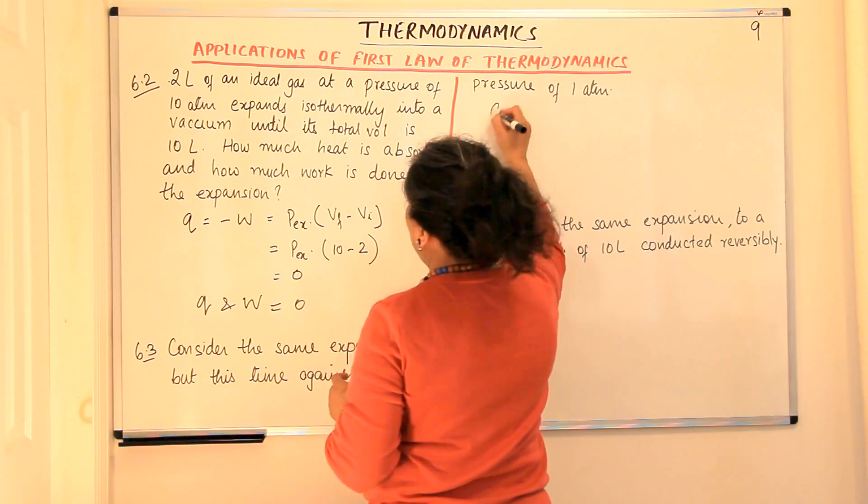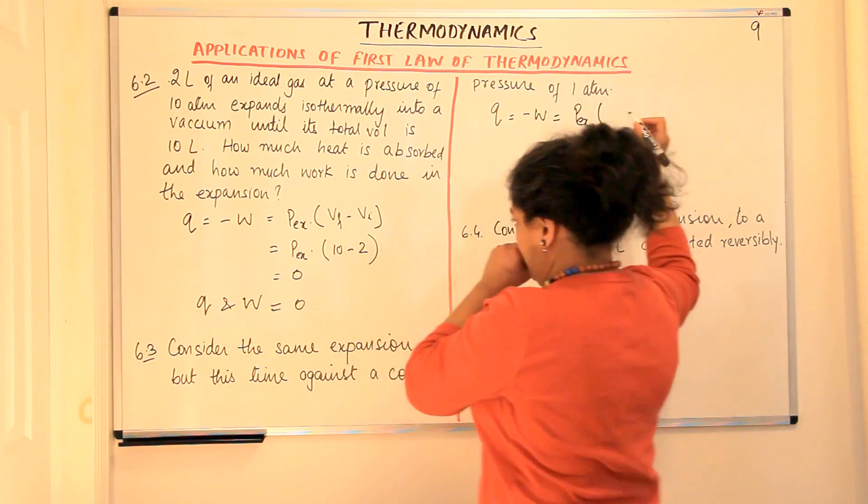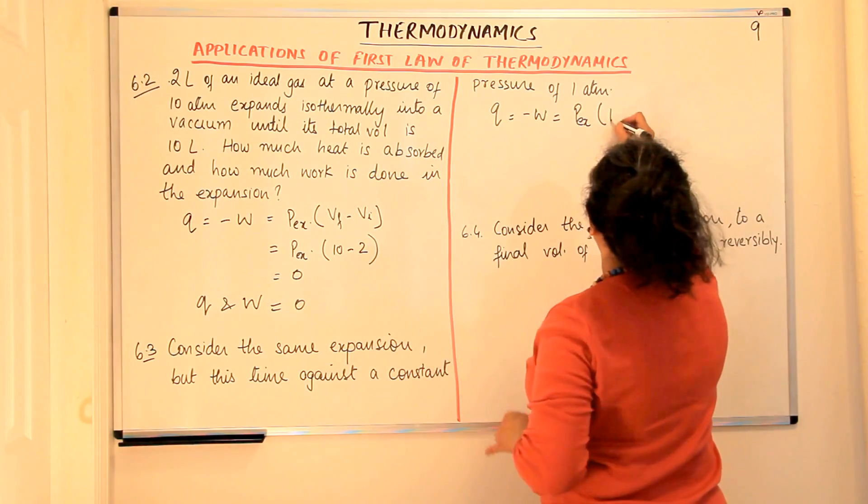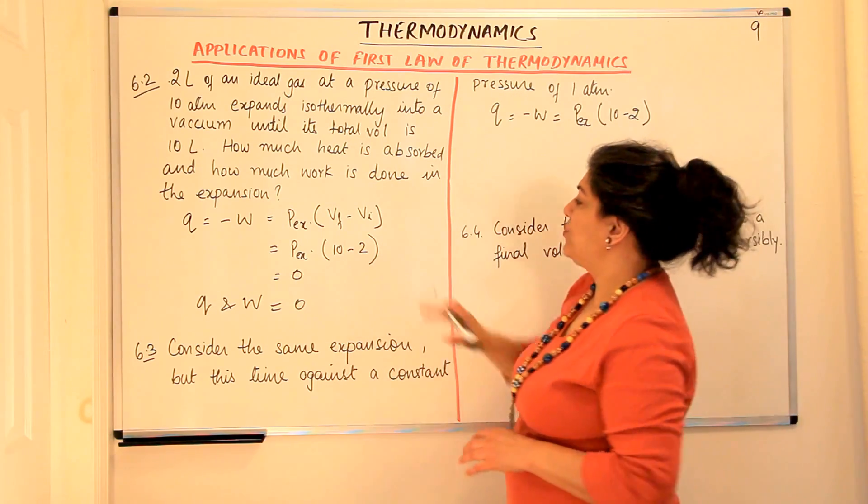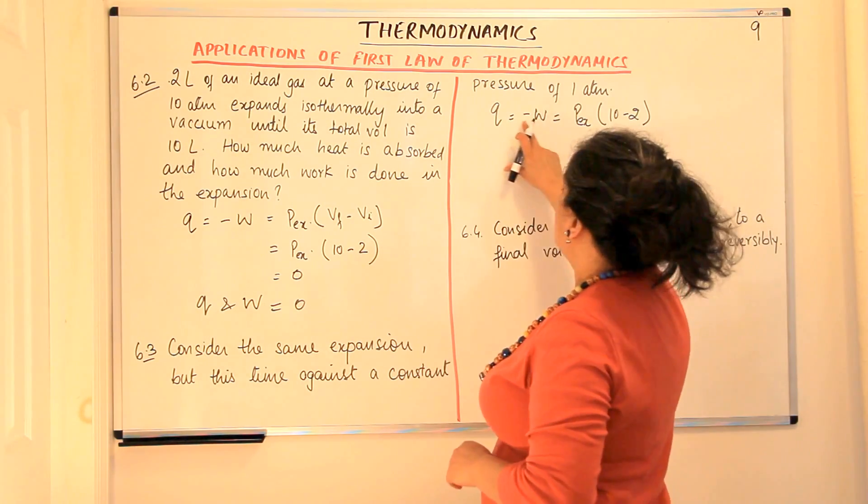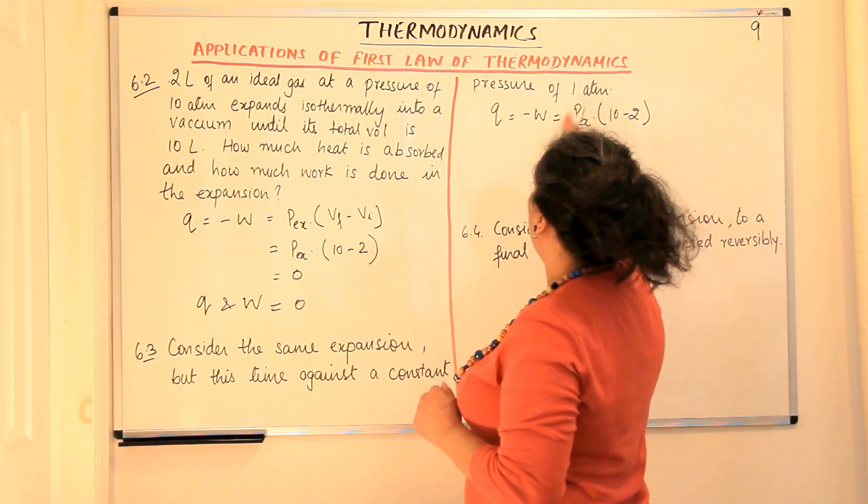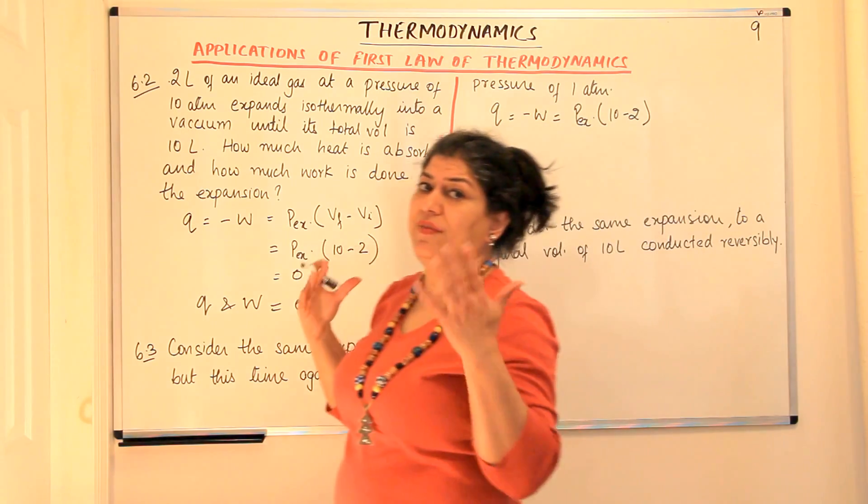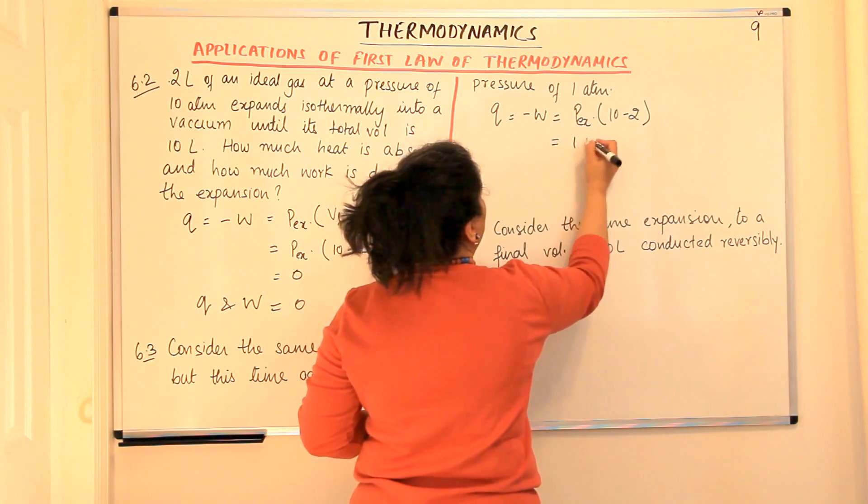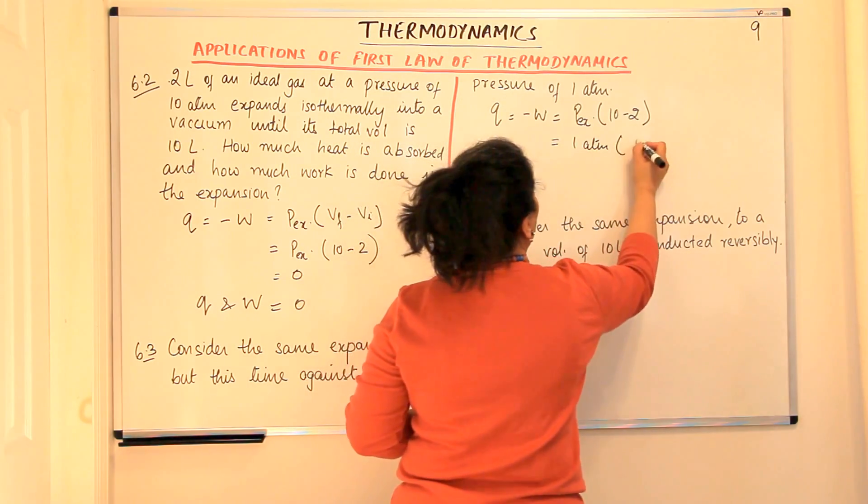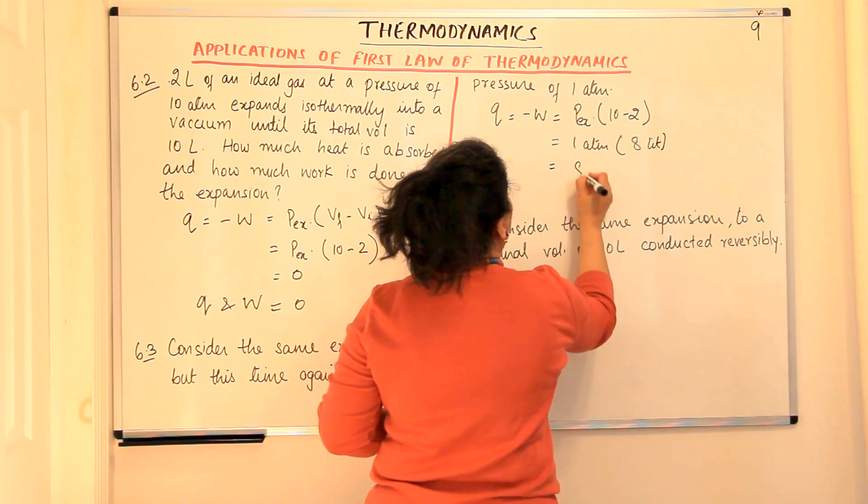The formula is again the same that Q is equal to minus W which is equal to P external into both V2 and V1 we know 10 minus 2, that is V final minus V initial. And since we know that W is minus P external and we are looking for minus W therefore this would be a positive, the negative and negative would get cancelled. So when we calculate this P external is 1 atmosphere and what's the volume now? 8 liters. So this would be equal to 8 liters atmosphere.